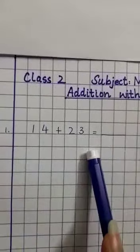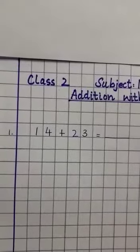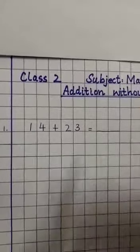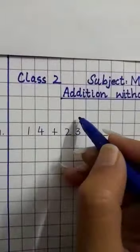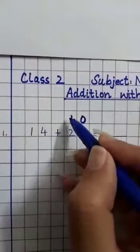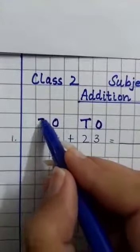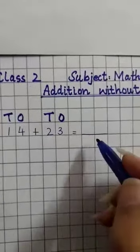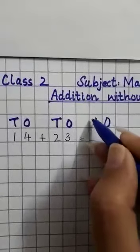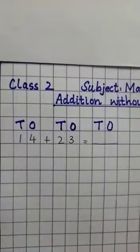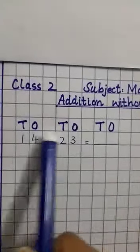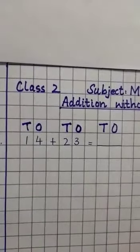First, we will write the place value on top. You always start from one side. This is 1, this is 10, this is 1, this is 10. And on the answer side you also write 1, 10 like this. The first step is to write the place value on top.